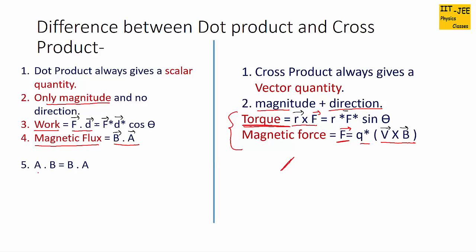The next difference is that if we change the order of vectors in dot product, the magnitude does not change. A dot B equals A times B times cos theta, and B dot A equals B times A times cos theta. Both give the same value since theta is the angle between them, so they are equal.